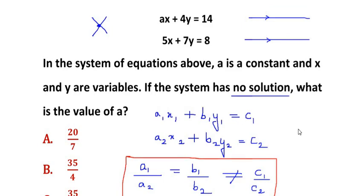So in this case by comparison we can say that a1 is a, b1 is 4, and c1 is 14. And by comparison again, a2 is 5, b2 is 7, and c2 is 8.